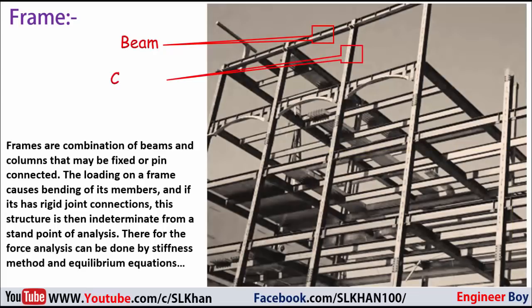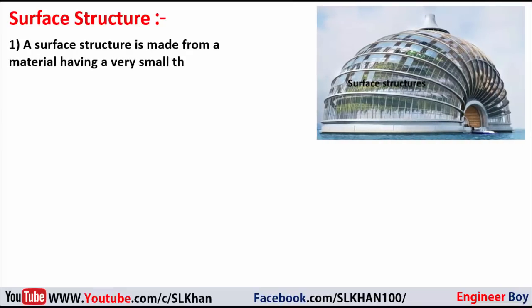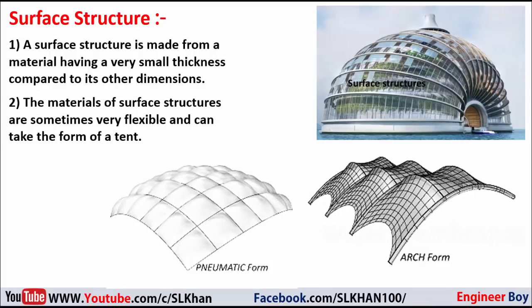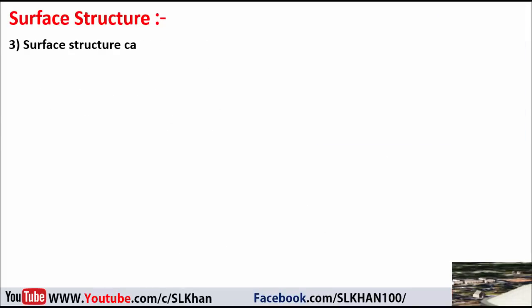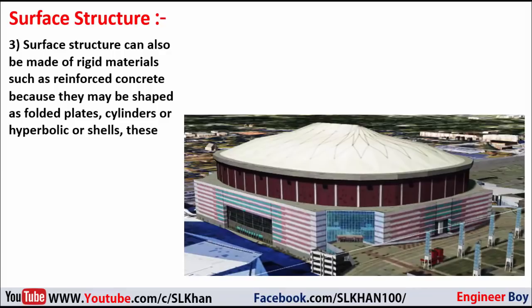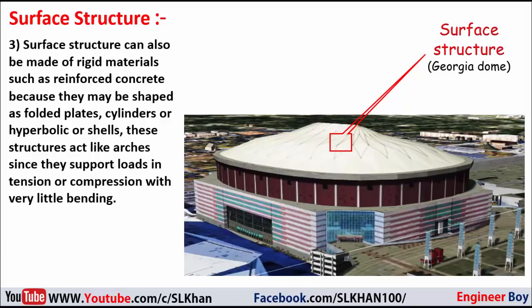A surface structure is made from a material having a very small thickness compared to its other dimensions. The materials of surface structures are sometimes very flexible and can take the form of a tent. Surface structures can also be made of rigid materials such as reinforced concrete, and may be shaped as folded plates, cylinders, or hyperbolic shells. These structures act like arches since they support loads in tension or compression with very little bending.